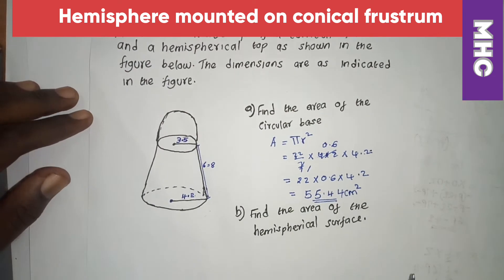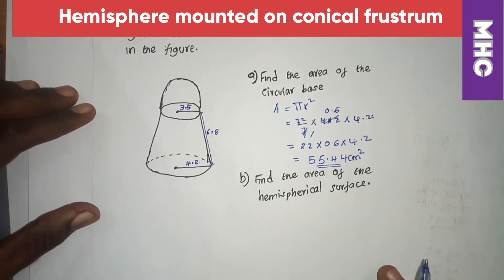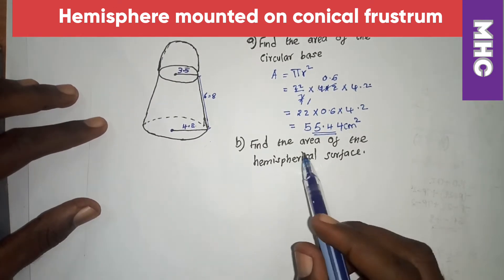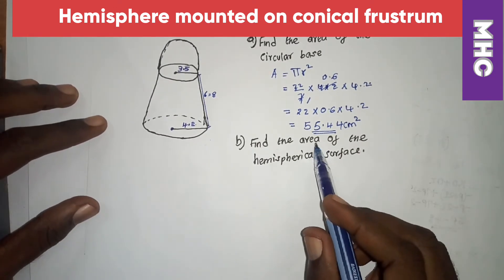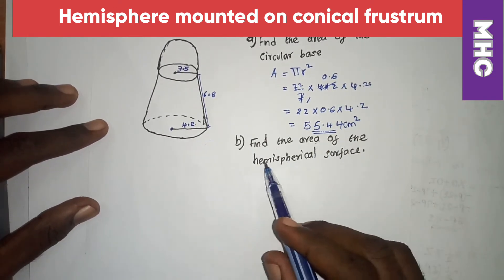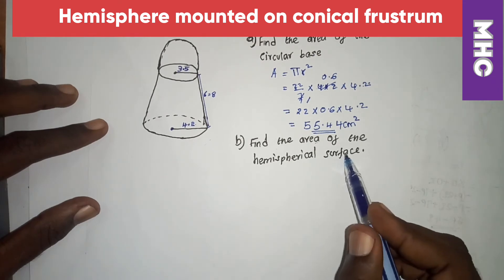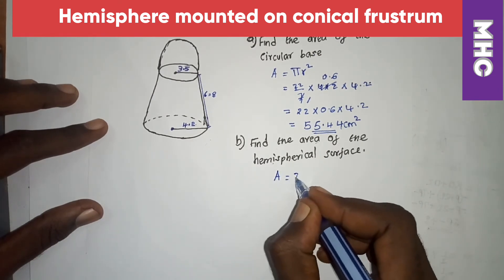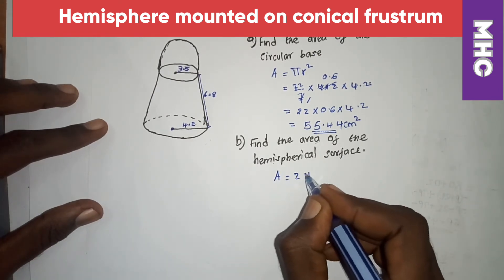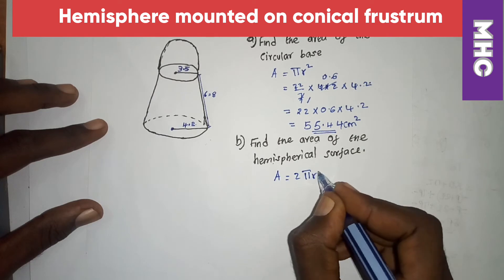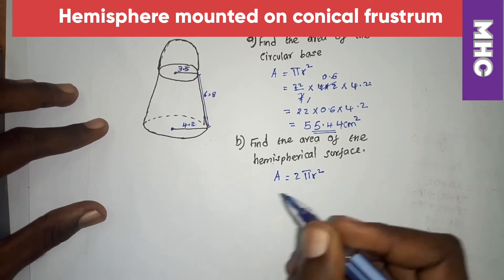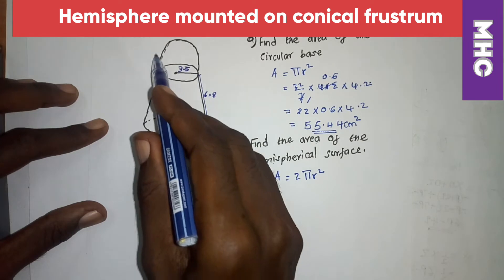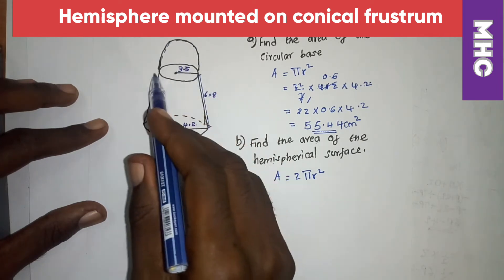Now let us go to Part B: find the surface area of the hemispherical top. The formula for the curved surface area of a hemisphere is 2πr².